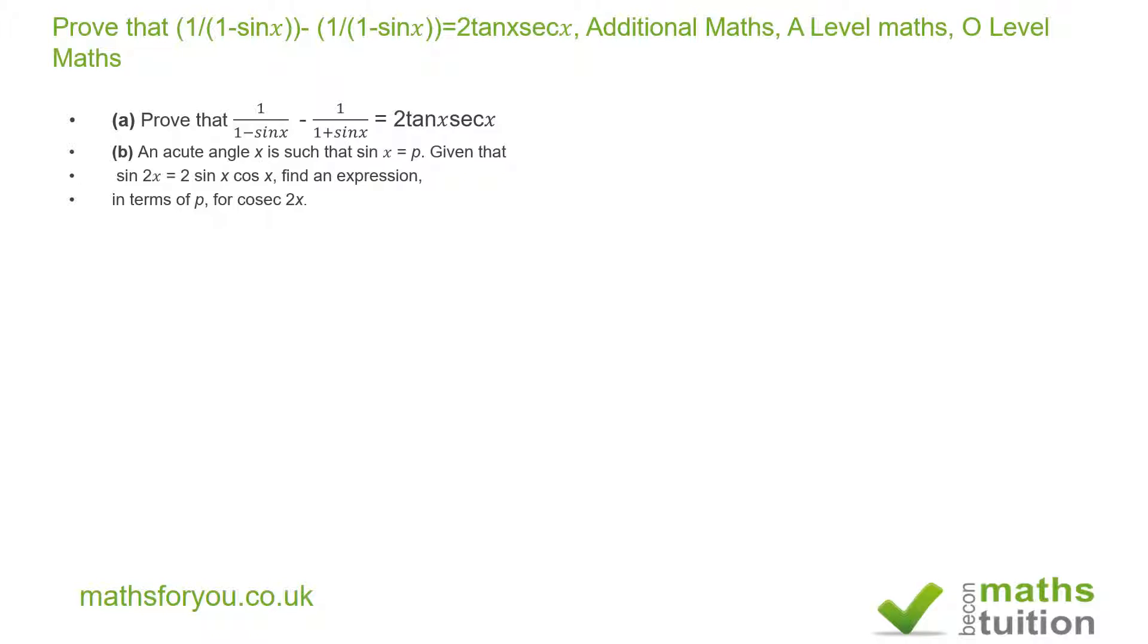Now for part a, what comes to mind here is difference of two squares, because if you remember, a minus b into a plus b is equal to a squared minus b squared. In this case, a is 1 and b is sin x.